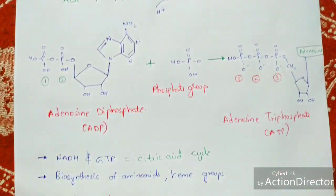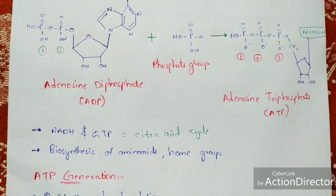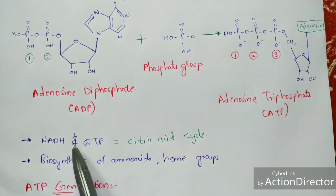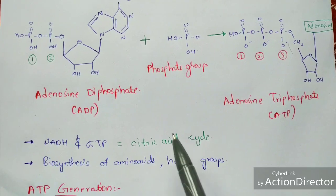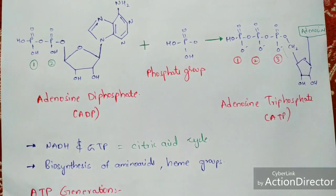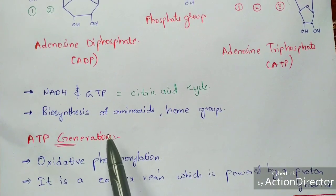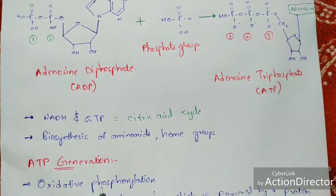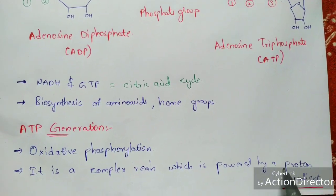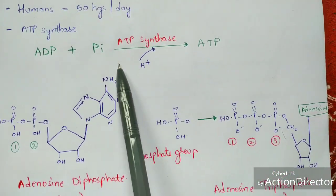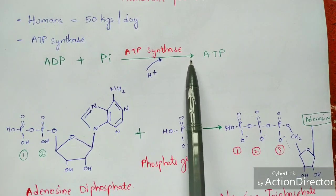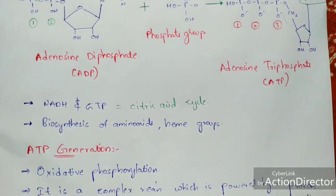Two important steps: mitochondria mainly helps in the generation of NADH and GTP, which can be seen in the citric acid cycle — explained in my previous videos. The biosynthesis of amino acids and heme groups also takes place as a major function of the mitochondria. ATP generation occurs by oxidative phosphorylation, which is a complex reaction powered by a proton gradient, where ADP combines with inorganic phosphate to form ATP.